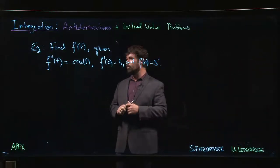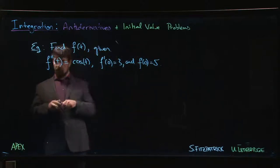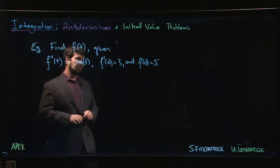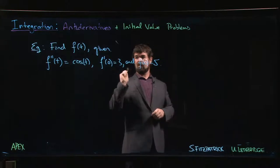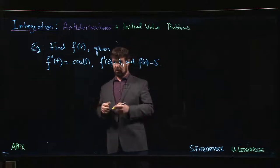Let's look at one last example before we move on. Here we're given the second derivative of a function and we want to recover the original function. This time you'll see that we're given two initial values: a value for f prime at zero and a value for f at zero, and we want to recover the function.